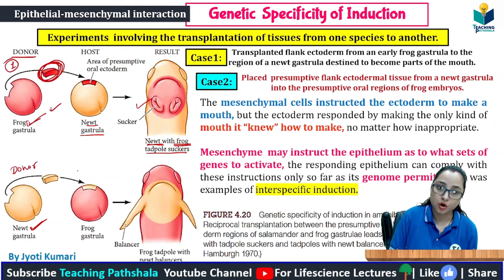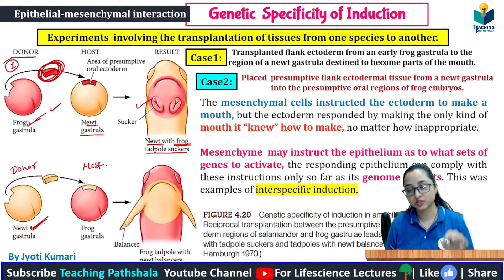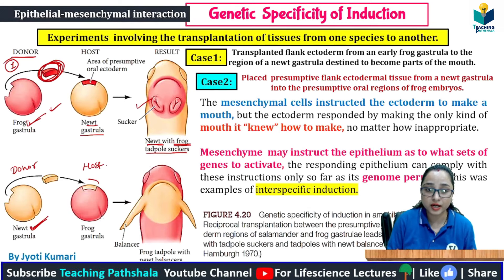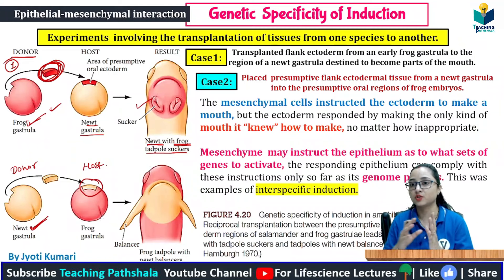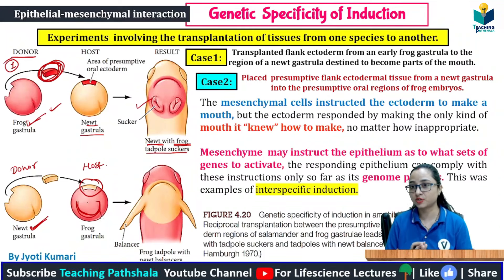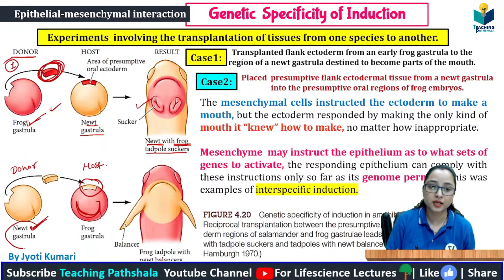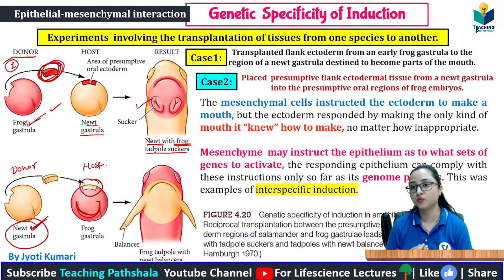Who is the donor and who is the host? In the Newt body, the oral tissue was transplanted into the frog's gastrula. What is the result? The whole body is frog, but the mouth part was from the Newt.